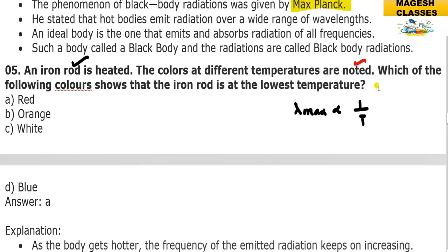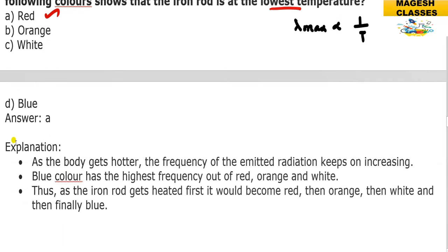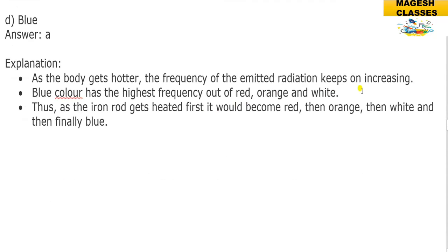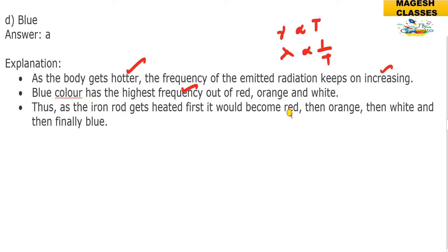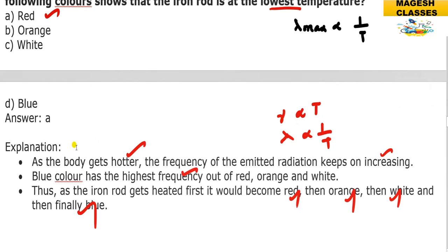The iron rod radiates at different wavelengths at different temperatures. At lower temperature the color is red. As the body gets hotter, the frequency of the emitted waves keeps increasing — frequency and temperature are directly proportional, wavelength and temperature are inversely proportional. Blue has the highest frequency. So as the iron rod is heated it goes from red to orange to white and finally blue. The answer for lower temperature is red.